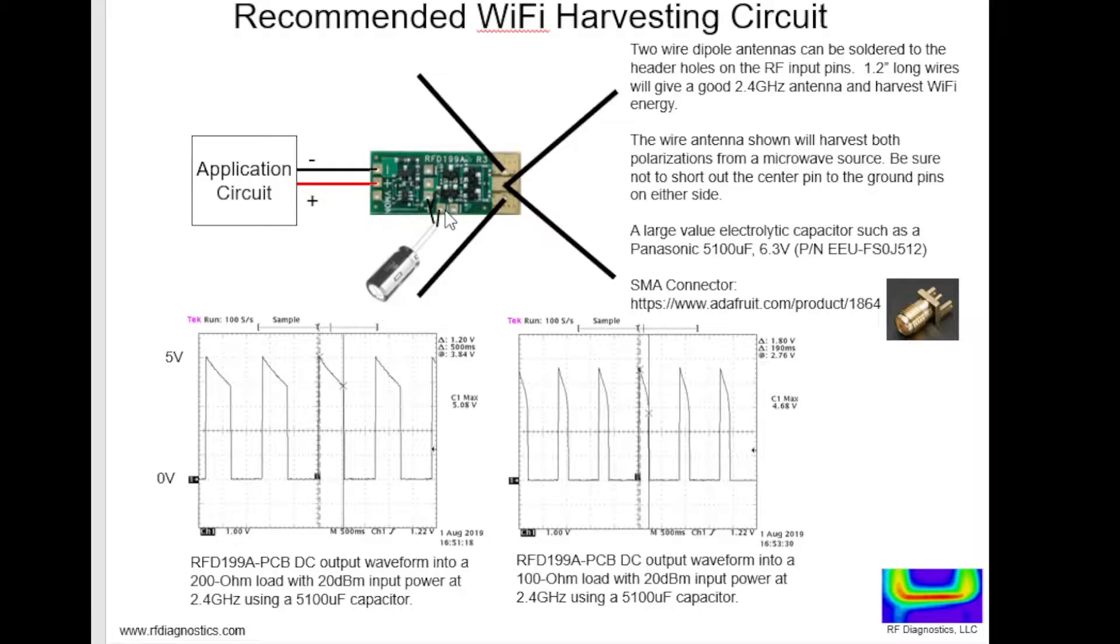You solder your large value capacitor to a ground pin and a positive pin coming out of the RF2DC converter, and then you connect these two nodes to your application circuit.